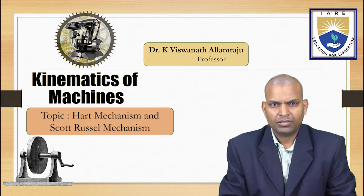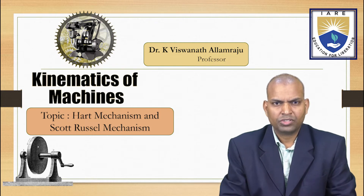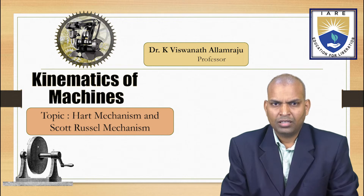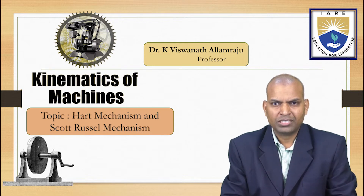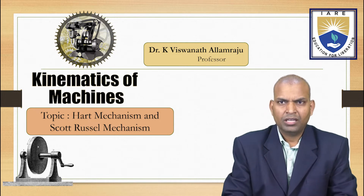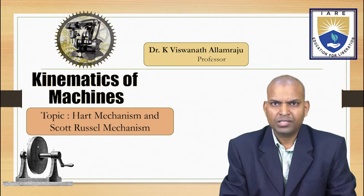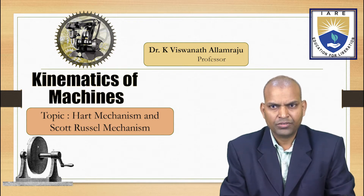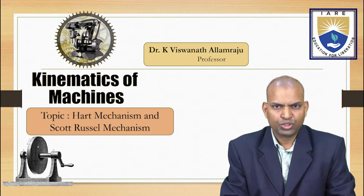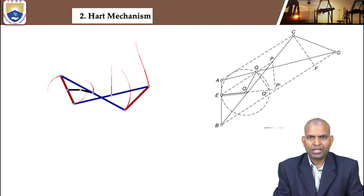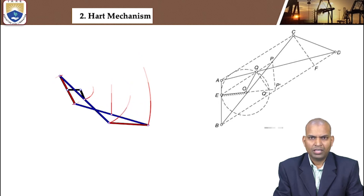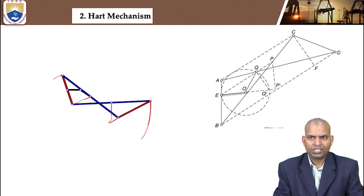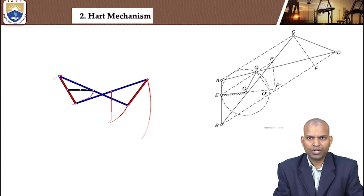We are going to study and discuss about straight line motion mechanisms such as the HOT mechanism and Scott Russell mechanism. The HOT mechanism is a six-link mechanism. The motion of the path traced by output points gives a straight line motion. In this animation you can understand the path traced by a point P.